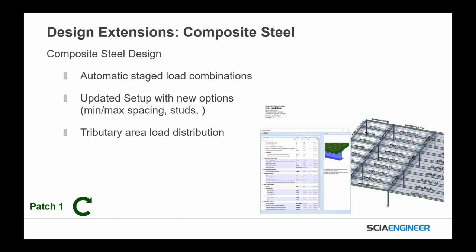We've also added tributary area load distribution, which was part of the larger project with diaphragms — a much better result for validating not only lateral load through diaphragms, but also the gravity load based on the expectations of the American user. This isn't just for slabs and composites, but for load panels on walls with wind load as well.